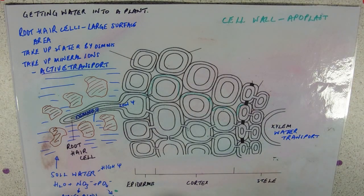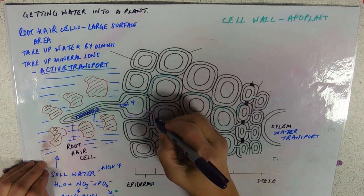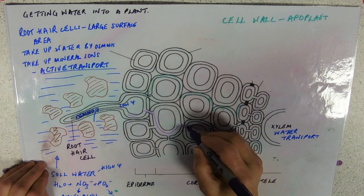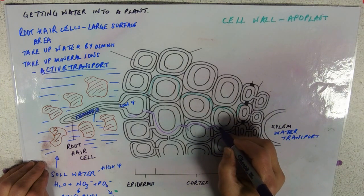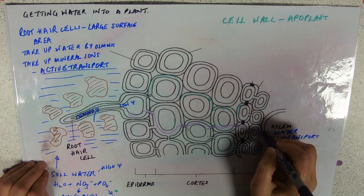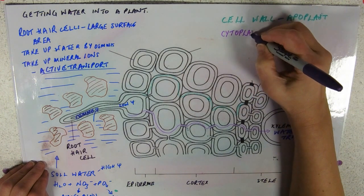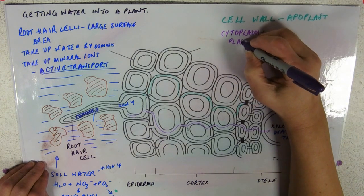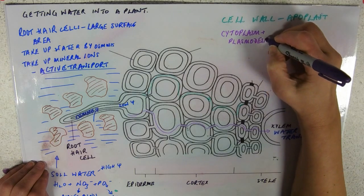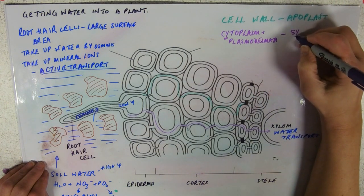No faffing about going across membranes and messing around doing osmosis and going through plasmodesmata. Much easier to just soak up through the cell wall. The other route is to actually go through the cytoplasm and through the plasmodesmata, and sometimes you're going to have to cross a membrane and sometimes you don't. And that pathway goes through the cytoplasm and plasmodesmata. And cytoplasm has a Y in it and so does its pathway: symplast.